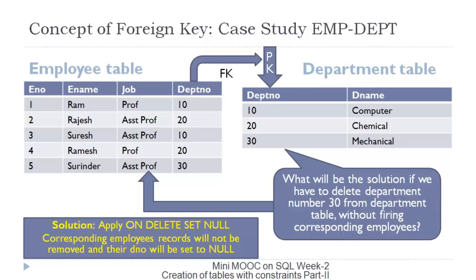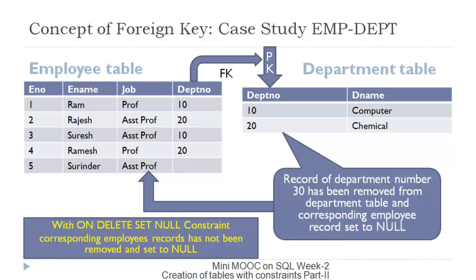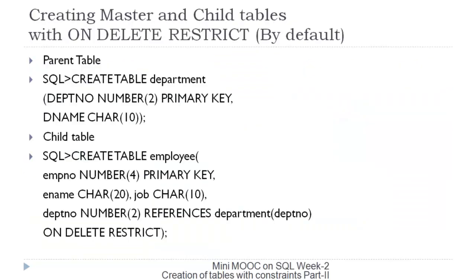Sometimes we wish to remove department records without deleting the corresponding employees. The solution is ON DELETE SET NULL — the corresponding employee records will not be removed, but their department number will be set to null. Department number 30 is removed from the department table, but the corresponding employee record still exists with its department number set to null. We achieve this through the ON DELETE SET NULL constraint.